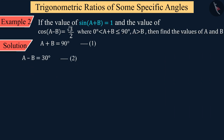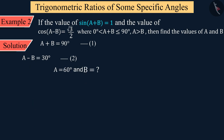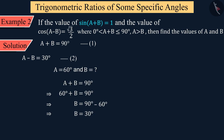Since we have to find the values of A and B, we add equations 1 and 2. On solving, the value of A is obtained as 60°. Then, by putting the value of A into equation 1 or equation 2, we get the value of B as 30°.